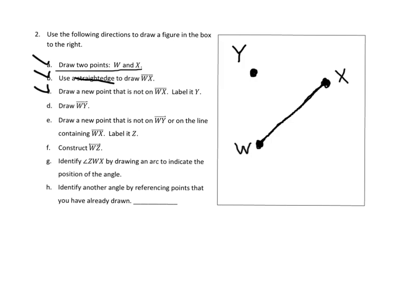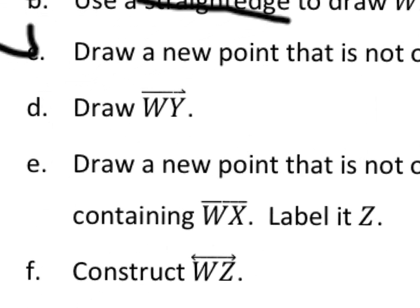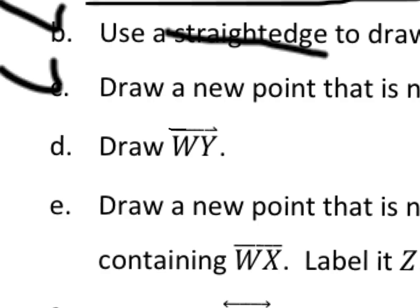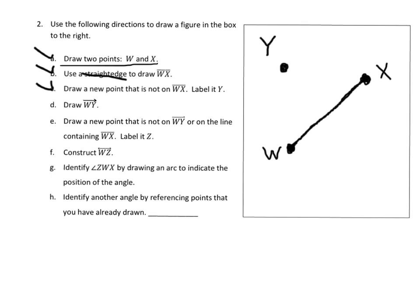Step D says draw the ray WY. The symbol shows no arrow on one end but an arrow on the other. That means it's a ray — the ray starts at W and goes to Y but keeps going forever. So it has a start but no end. It's important that we get the correct direction: it starts at W and goes to Y and goes forever. That's the ray WY.